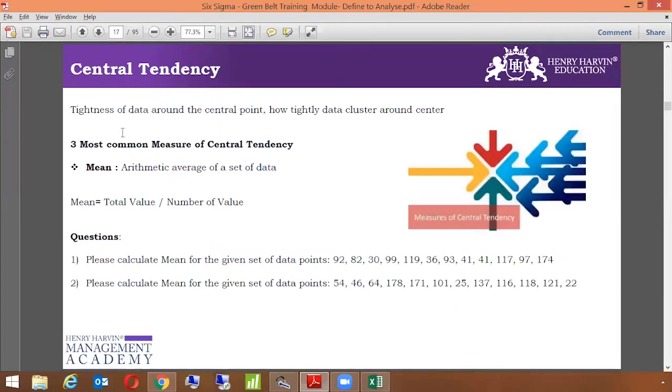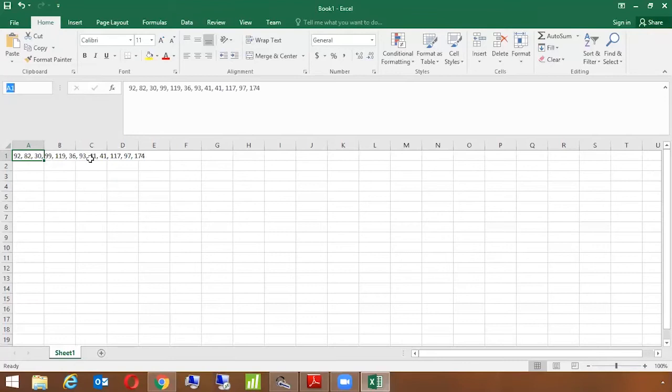Let's cover them one by one. Mean is the arithmetic average of a set of data. Mean equals total value divided by number of values. It's a simple average calculation. You can see there are certain values here. Please calculate mean for the given set of data. I have this data with me, so I'll just copy it and go to Excel.